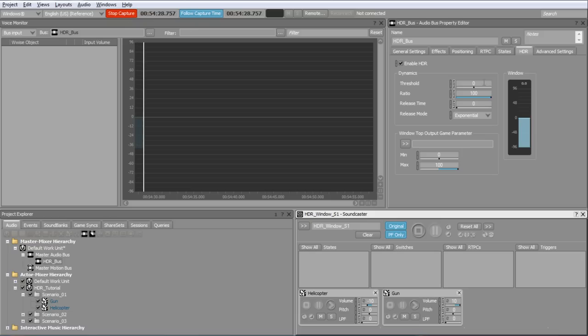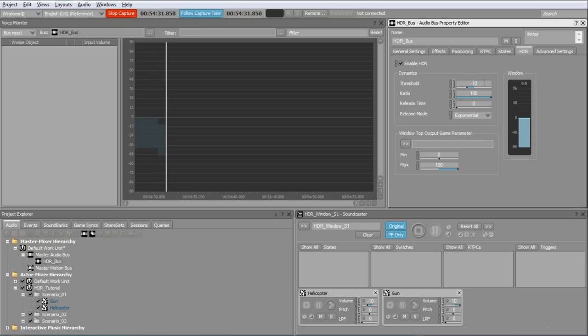For example, lowering the threshold to minus 10 dB, the window bottom will now be set to minus 50 dB, preserving the total dynamic range of 40 dB.